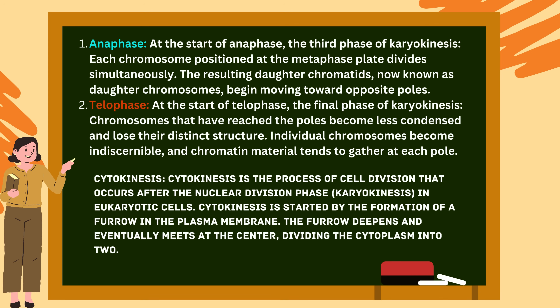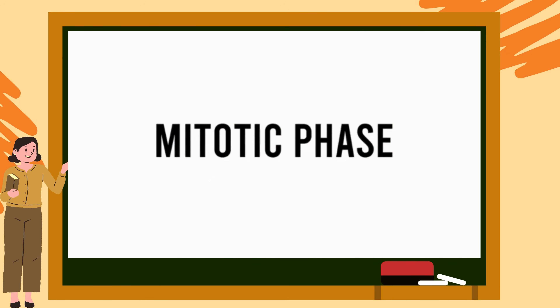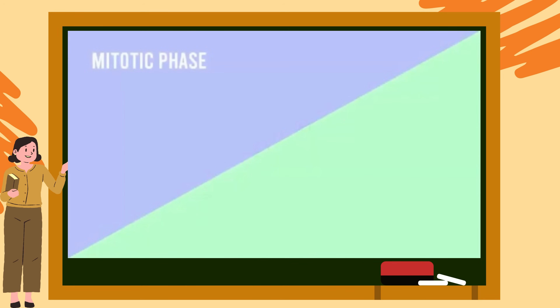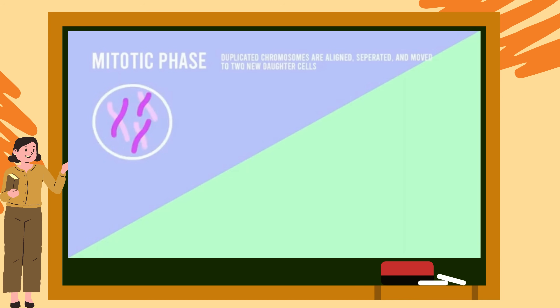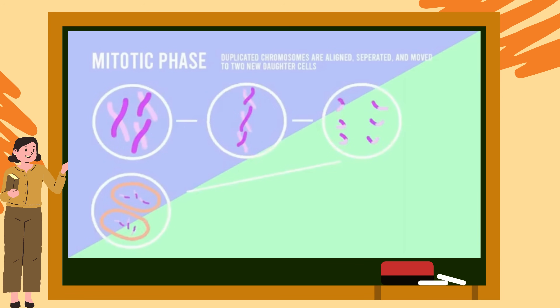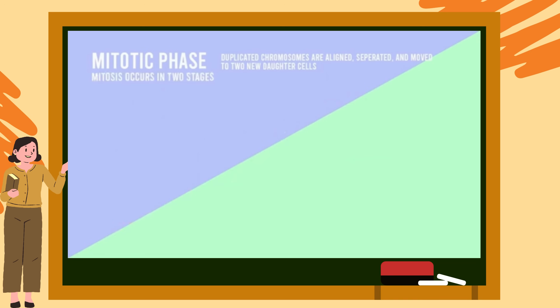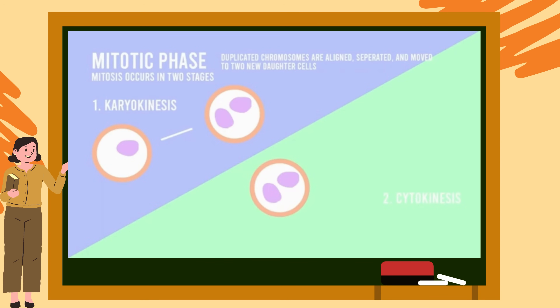Now let's understand the mitotic phase in detail. The mitotic phase is a multi-step process during which the duplicated chromosomes are aligned, separated and moved into two new identical daughter cells. Mitosis occurs in two stages: karyokinesis, where division of the cell nucleus occurs, and cytokinesis, where the cell itself is divided into two daughter cells.